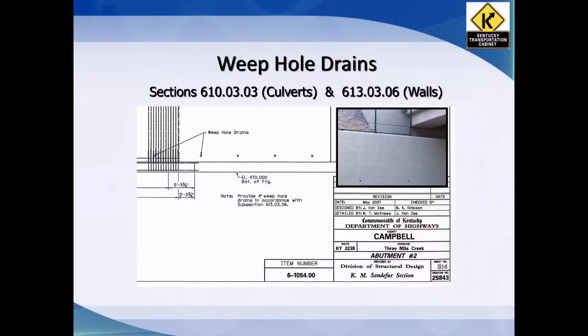Weep holes are critical to give us adequate drainage. This is detailed in Section 610 and 613. For bridges on a wall — cast-in-place walls, which an abutment is considered — these are every eight feet. On culverts, they're every 25 feet. They're six inches from the bottom of the footing, and they must have a fabric-wrapped drain on the back side. That drain is to make sure soil or rocks don't come through and clog the weep hole.